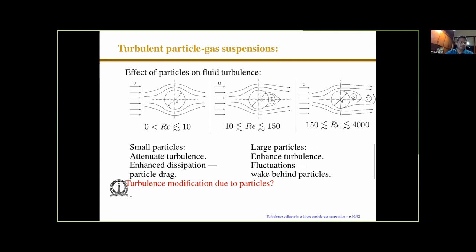For particle Reynolds number less than about 10, you have roughly fore-aft symmetry. From 10 to about 150, a wake forms with a separation bubble at the rear. Beyond this, there is vortex shedding and turbulence in the wake. It is generally believed that small particles attenuate turbulence because of enhanced dissipation due to particle drag — there is an additional mechanism for energy dissipation beyond normal turbulent dissipation, so the turbulence gets attenuated. Large particles can enhance turbulence due to wake and vortex shedding. This is the mechanism — the effect of small particles — that we were trying to analyze using direct numerical simulations.